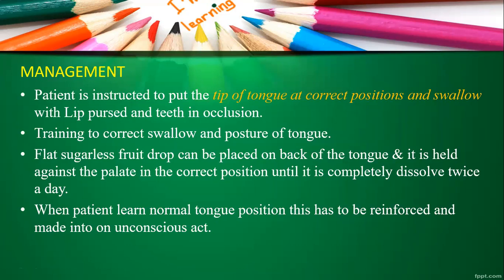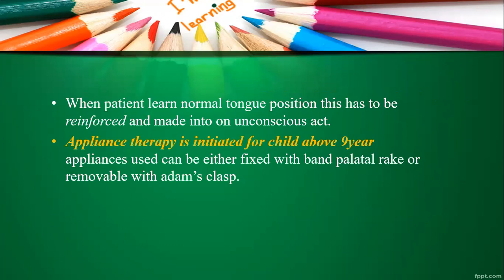For management, various exercises are used to train the tongue to a normal position. The patient is instructed to put the tip of the tongue at the correct position and swallow with the lips first and even occlusion. Training to correct swallowing and tongue posture is very important. Another important exercise is a flat sugarless root drop, placed on the back of the tongue and held against the palate in the correct position until completely dissolved, twice a day. When the patient learns normal tongue position, this must be reinforced and made into an unconscious habit — reinforcement and motivation are very important.